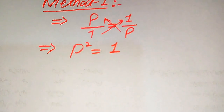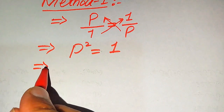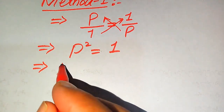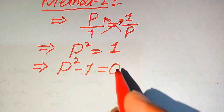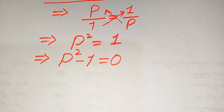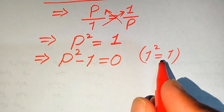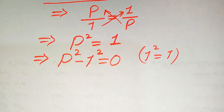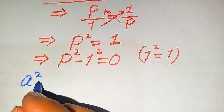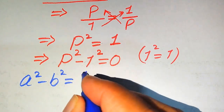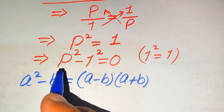Since we are solving for P, we need to remove the square sign. First, move 1 to the left-hand side, giving P squared minus 1 equals 0. We know that 1 squared equals 1, so we rewrite 1 as 1 squared. Now we apply the algebraic identity: a squared minus b squared equals a minus b times a plus b.